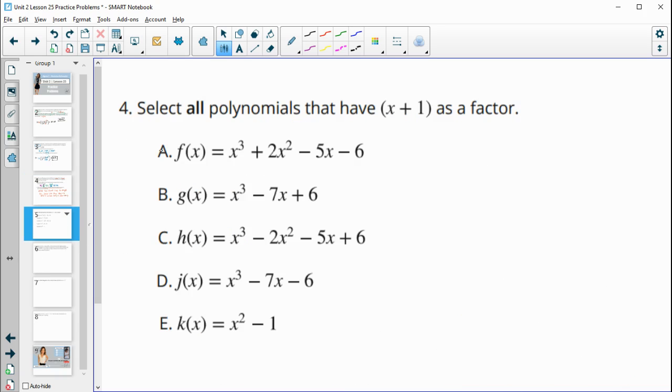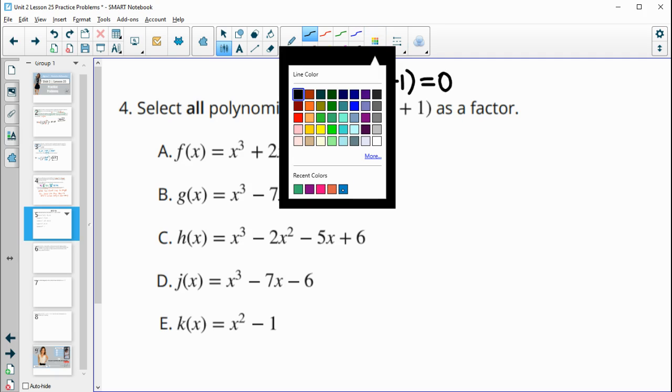And then plus the new 40 milligrams. Number four, select all polynomials that have X plus 1 as a factor. So remember if X plus 1 is a factor, that means that there's no remainder. And so then what that means is that your function, if we plug in the 0, so the 0 that goes with X plus 1 is negative 1. So if we plug negative 1 into the function, it should equal 0. If it does, then it's a factor. If it doesn't, then it's not a factor.